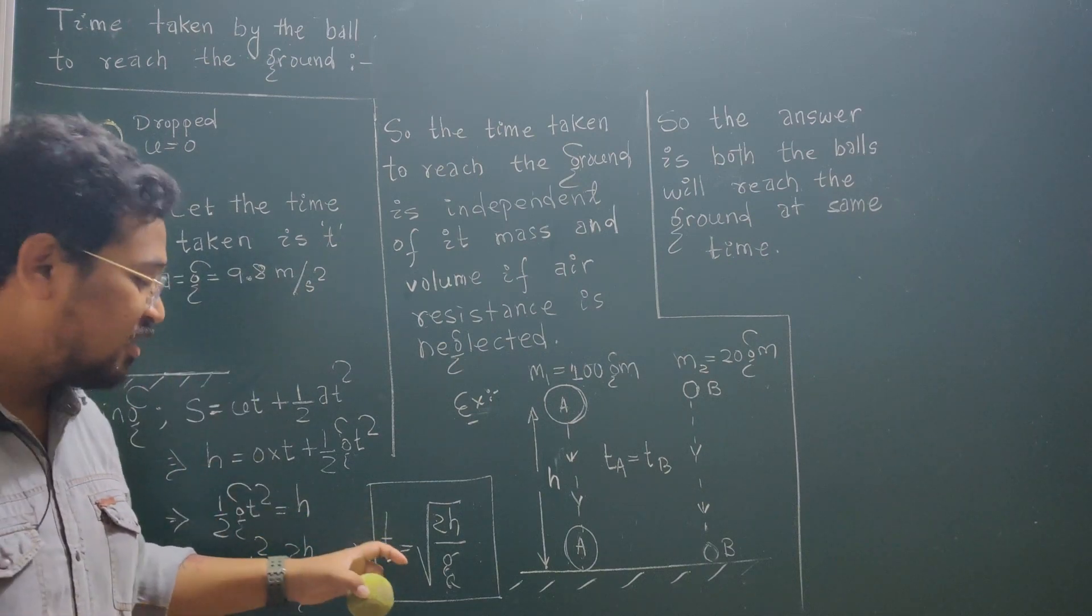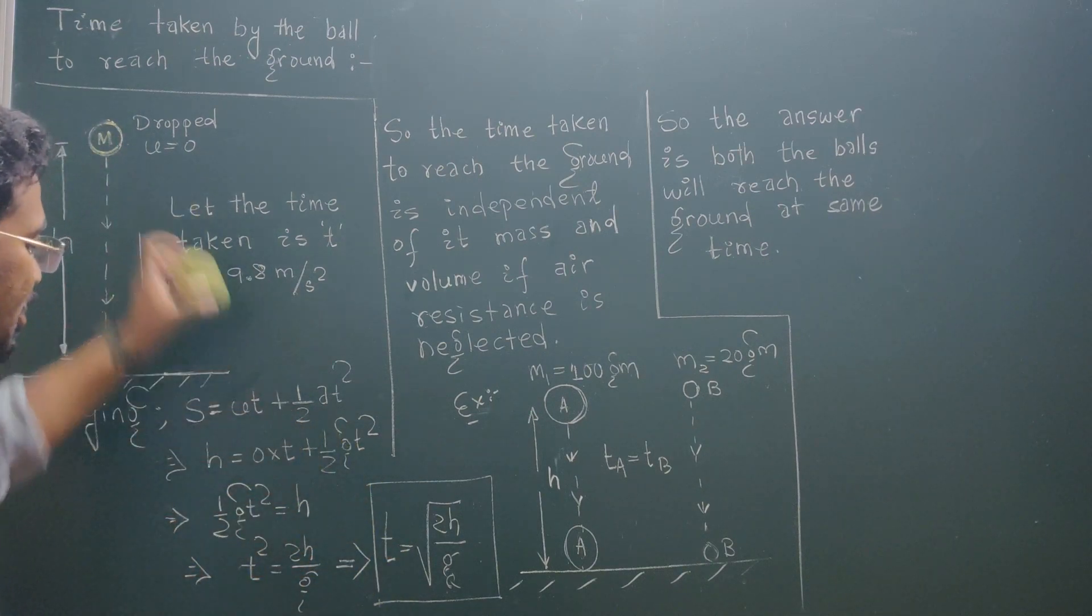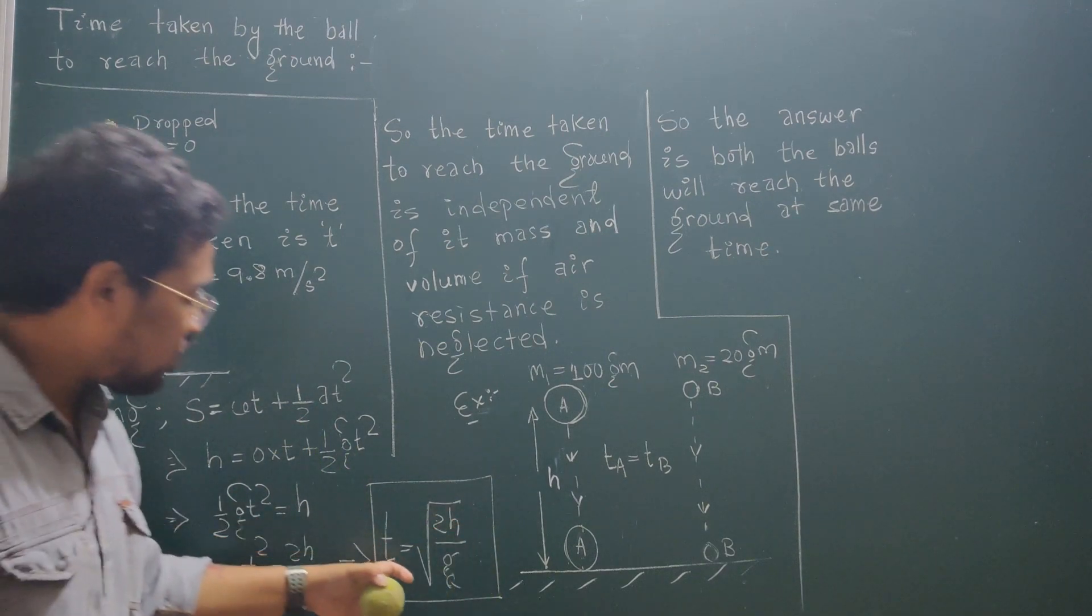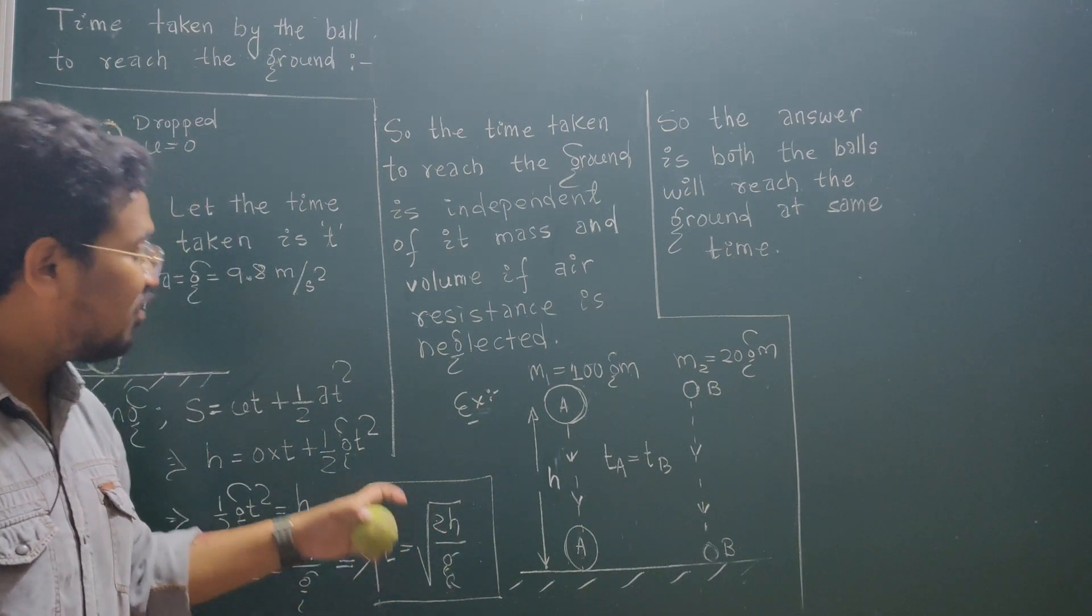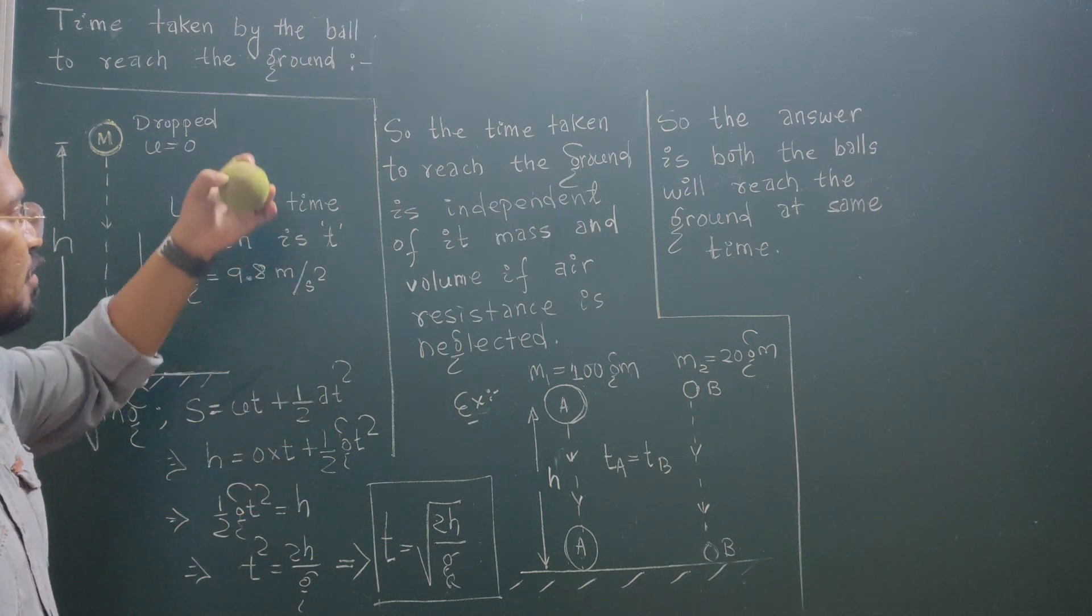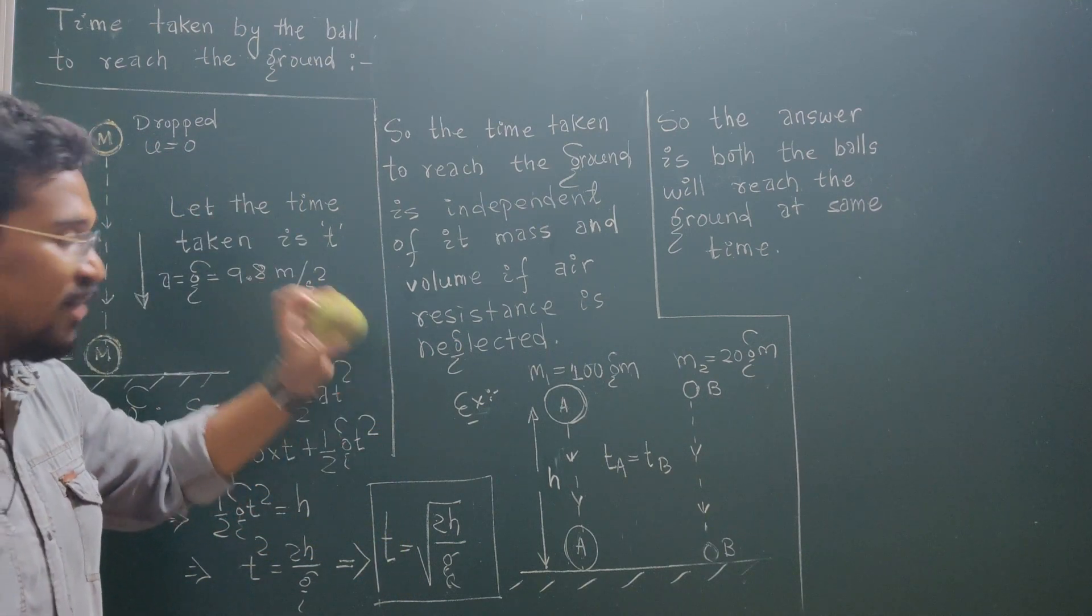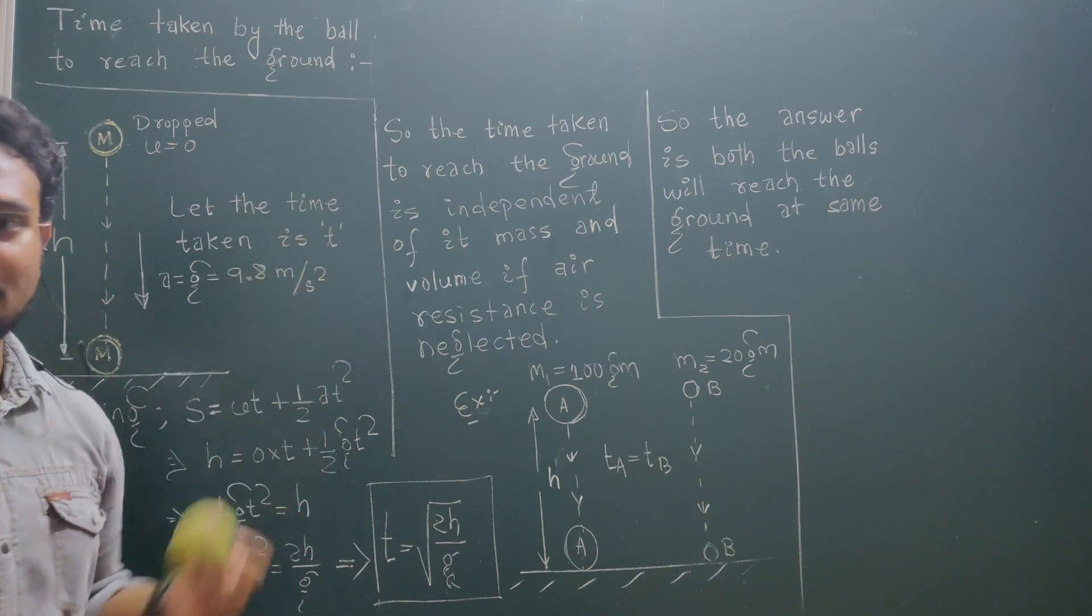By solving this equation, we find the time taken by the ball: t = √(2h/g). From this equation, we conclude that the time taken by the ball to reach the ground is independent of its mass and volume if air resistance is neglected.